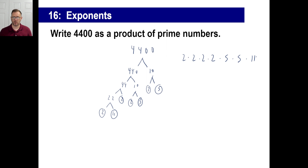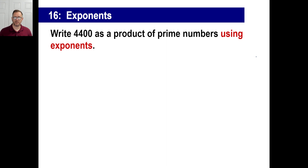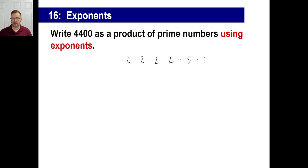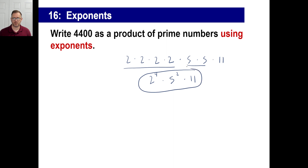Now, writing 4,400 as a product of prime numbers using exponents. We had two times two times two times two, then five twice and 11. So rather than writing all that out, write two to the fourth power, times five to the second power, times 11. That saves you a little time having to write all that stuff.